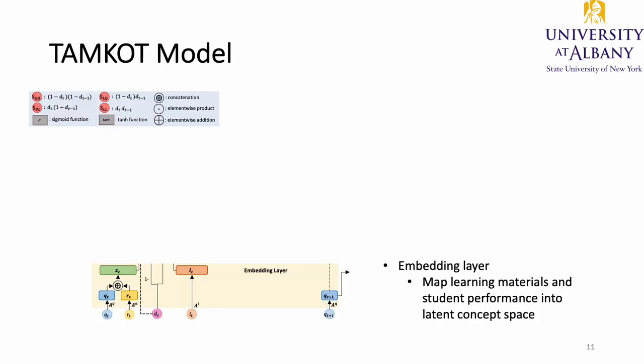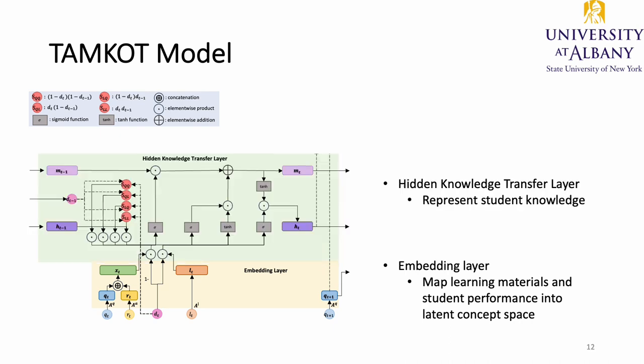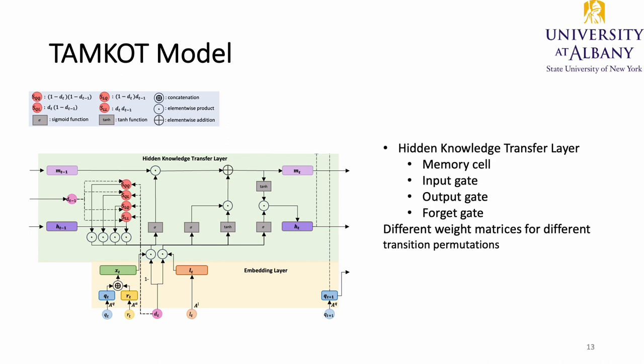Therefore, we propose the transition-order model TOMCOT. In TOMCOT, we have an embedding layer that maps learning materials and student performance into a latent concept space. Then we have a hidden knowledge transfer layer for representing student knowledge. Inspired by LSTM, our model also has four components: an input gate, an output gate, a forget gate, and a memory cell. However, we use different weight matrices for different transition permutations to transfer previous knowledge to the current state.